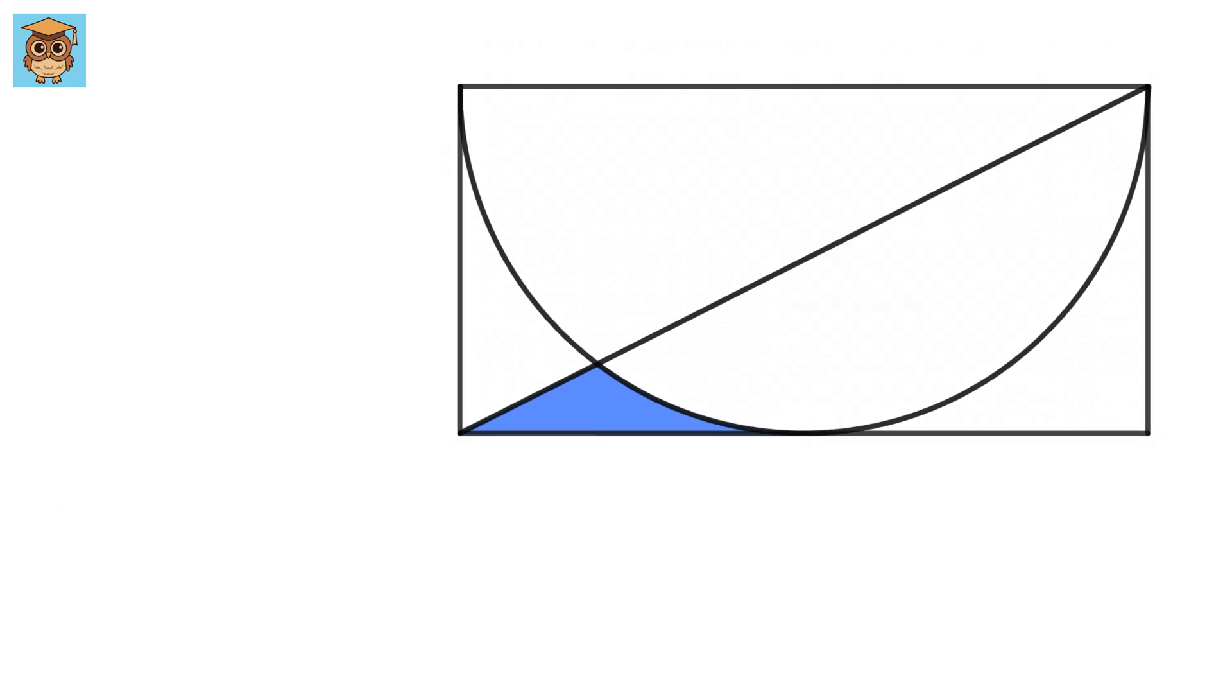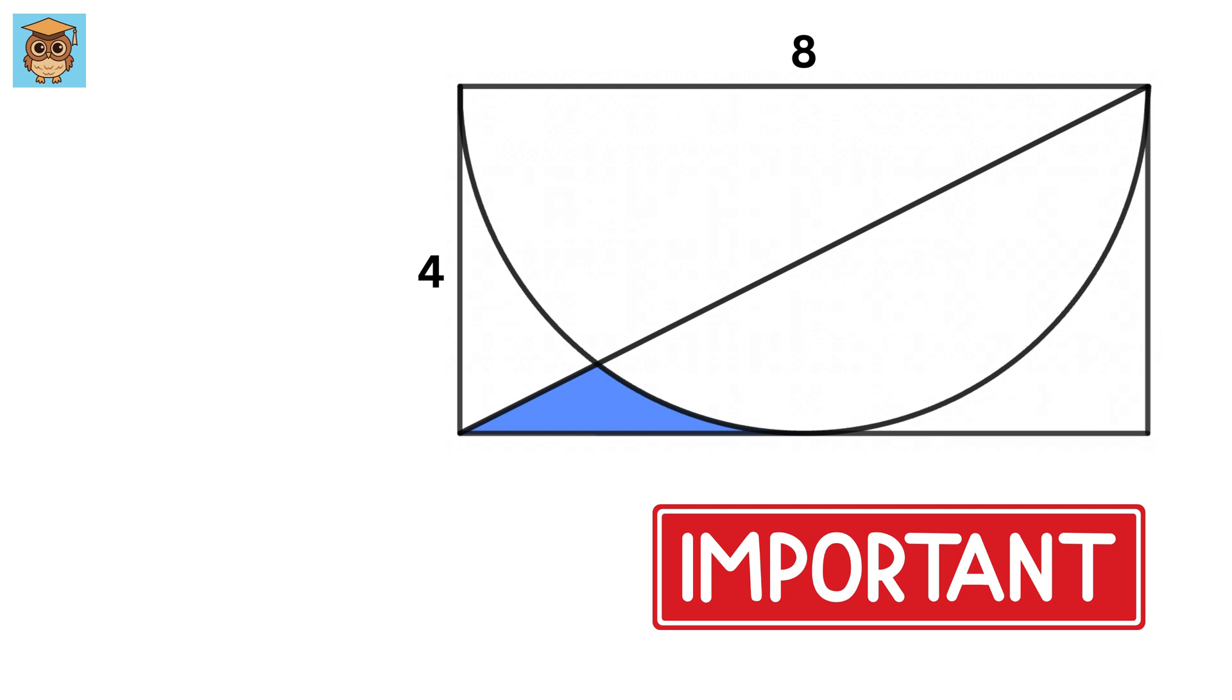We have a rectangle whose sides are 8 and 4 units. We then have a semicircle inscribed inside this rectangle. Our job is to find the area of this blue shaded region, but an important thing to note is that we cannot use integration for this problem.